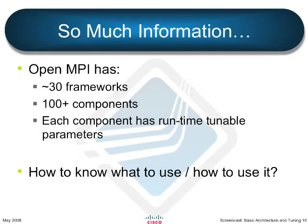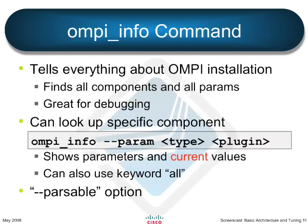OpenMPI has somewhere in the order of 30 frameworks, and at any given time over 100 different components. Because every component has runtime tunable parameters, how are you supposed to know what all the parameters are? The answer is the ompi-info command. It tells you everything about your OMPI installation — it finds all the components that are installed, tells you what all the parameters are for every component, and it's great for debugging too because it'll show you the current value of the components. So if you set something in a file and forgot about it, ompi-info will tell you.